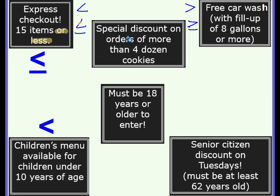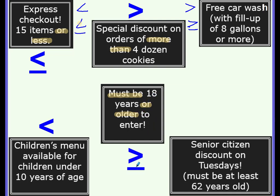'Special discount on orders of more than four dozen cookies.' More than is your clue word, so the number of cookies has to be greater than four dozen. 'You must be 18 years or older to enter' — must be 18 or older means the age has to be greater than or equal to 18, so your inequality symbol would be ≥ 18.